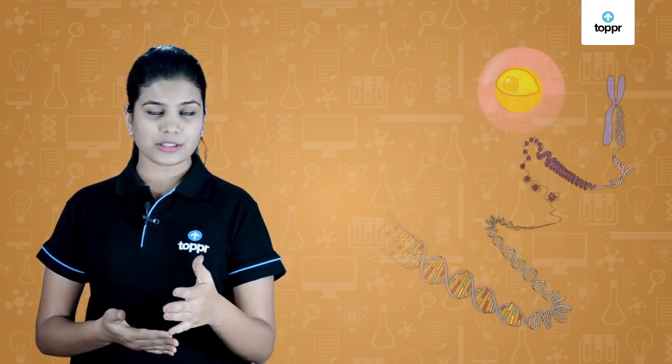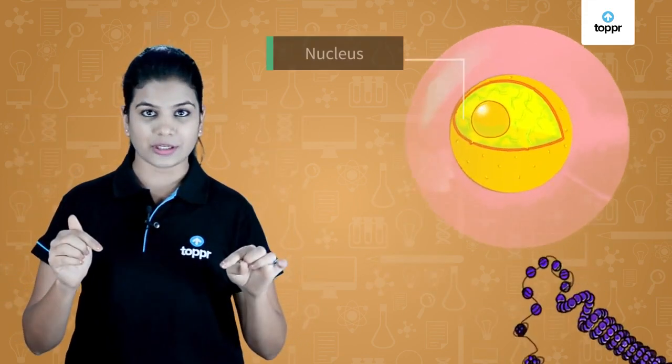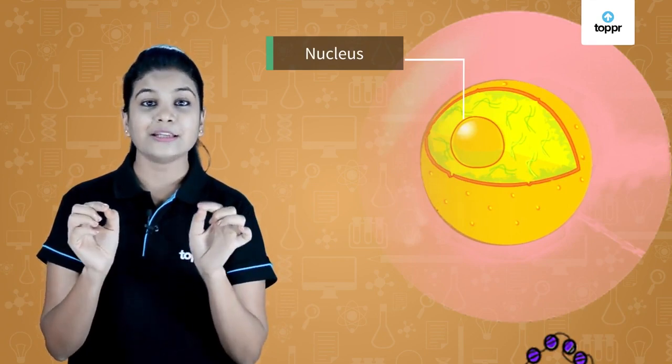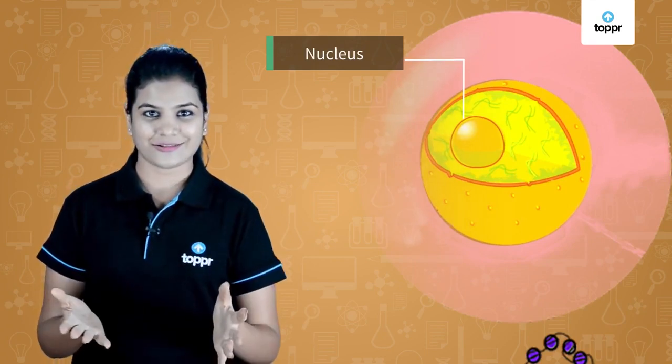So what is that thing that parents give to their children to cause these similarities? What is that thing which is making them so similar? The answer to this lies deep within the nucleus, right there in the genes.